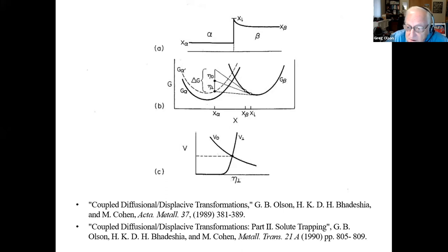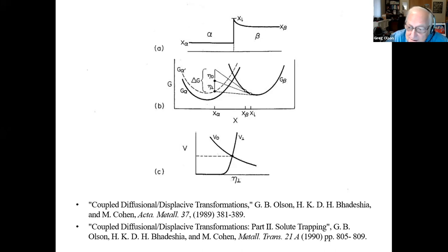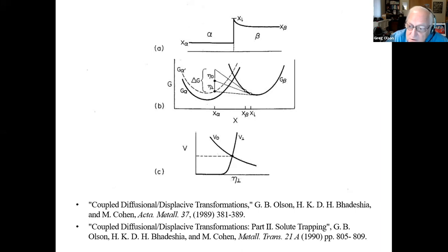Looking at the difference in the magnitude of capillary energy at the nucleation stage versus the growth stage, as the particle grew in size it would need less partitioning. In the case of lower bainite, it led to the prediction that while the nucleation would be assisted by partial partitioning, the growth could be partitionless, as had been proposed by Harry's earlier models.